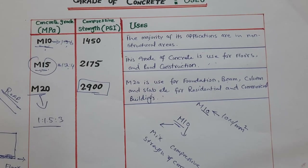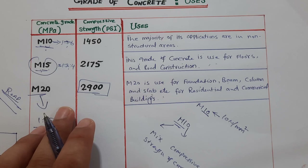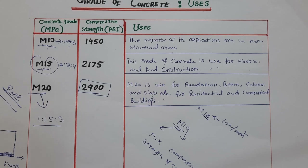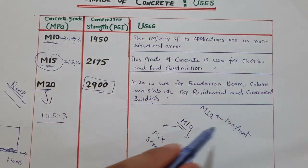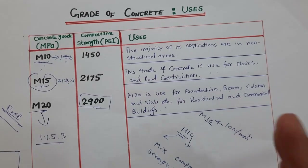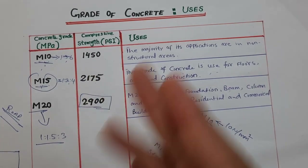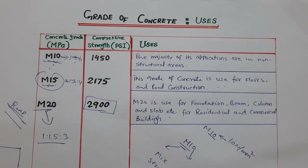M25 and M30 are called standard concrete grades, used for higher residential buildings or mega projects depending on structural load. In summary, this video covers the grade of concrete, what it means in MPa or Newton per mm², its compressive strength in PSI, mix ratios, and the uses of different grades like M10, M15, M20, M25, and M30. Thanks for watching — see you in the next video.